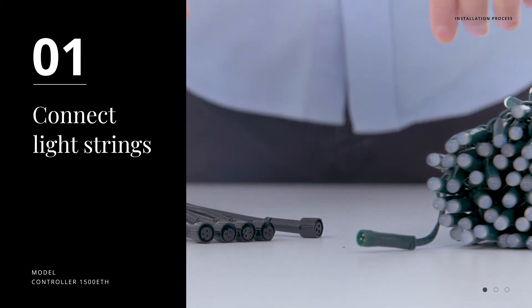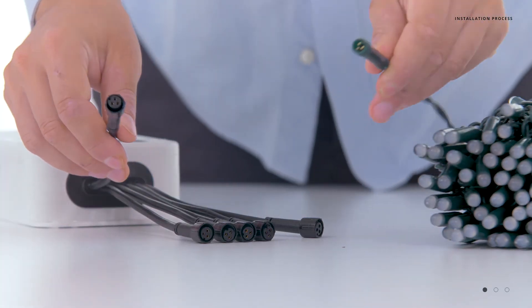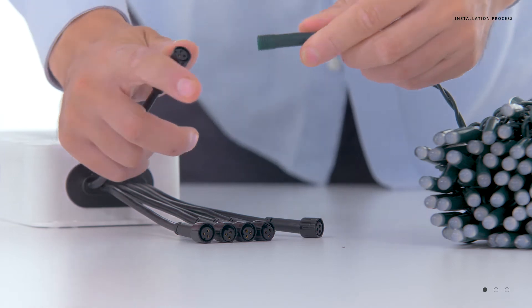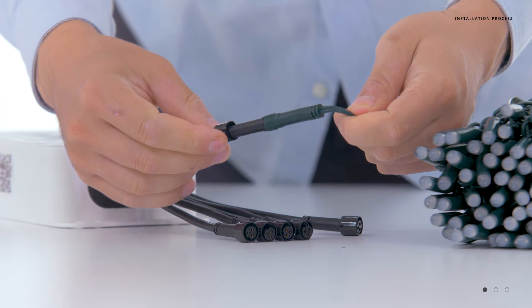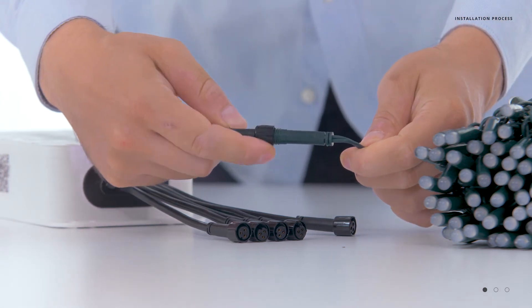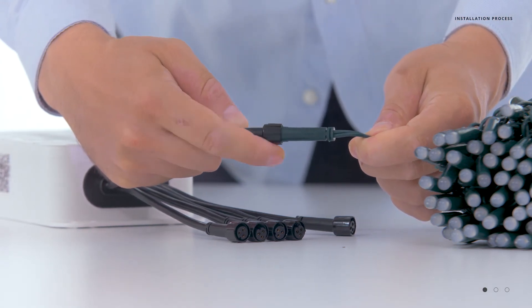Looking at the output of the controller and the light strings, you will see that there is a polarized connection. They only go together one way. Simply firmly press them together and then tighten down the collar to ensure a watertight fit.